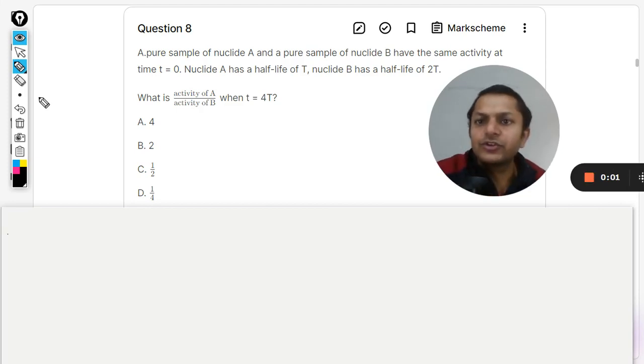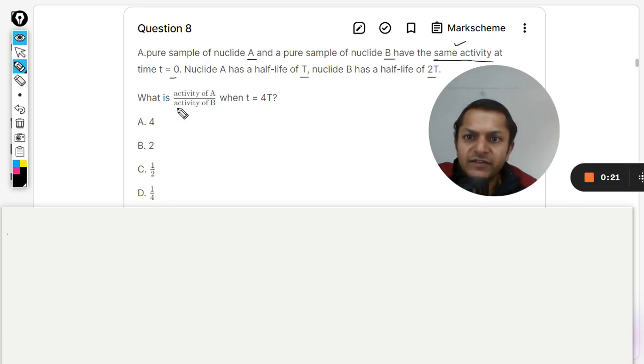Curious students, let us see what is there in this question. A pure sample of nuclide A and a pure sample of nuclide B have the same activity at t equals zero. Nuclide A has a half-life of t and nuclide B has a half-life of 2t. So to start with, they have the same activity at t equals zero. What is the activity of A and variable activity of B when t equals 4t?